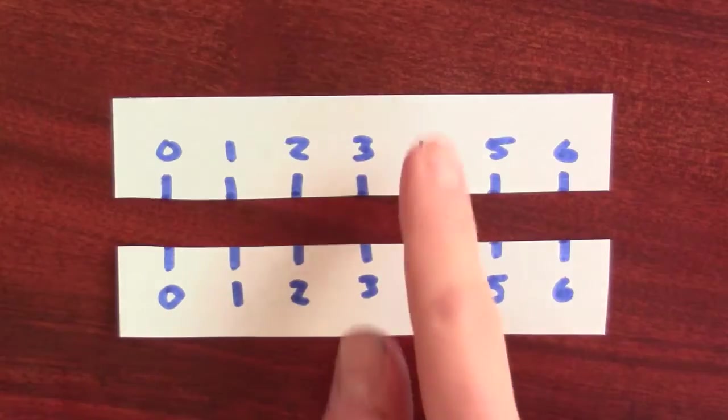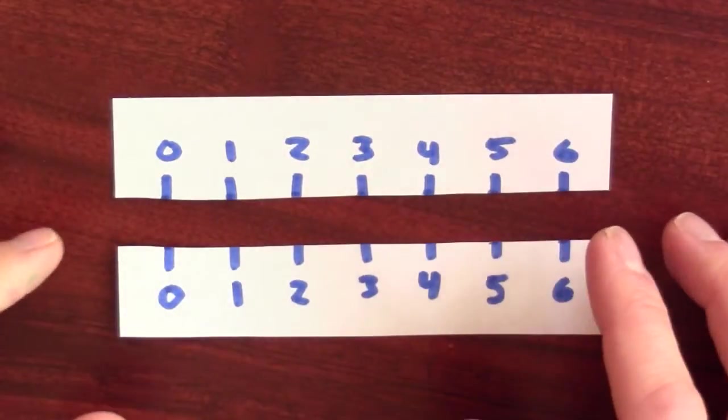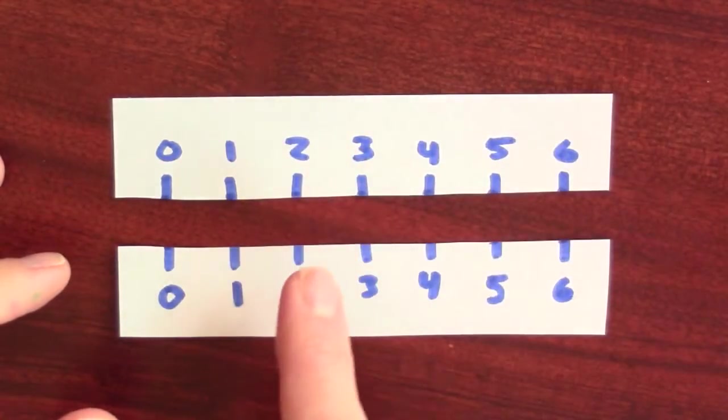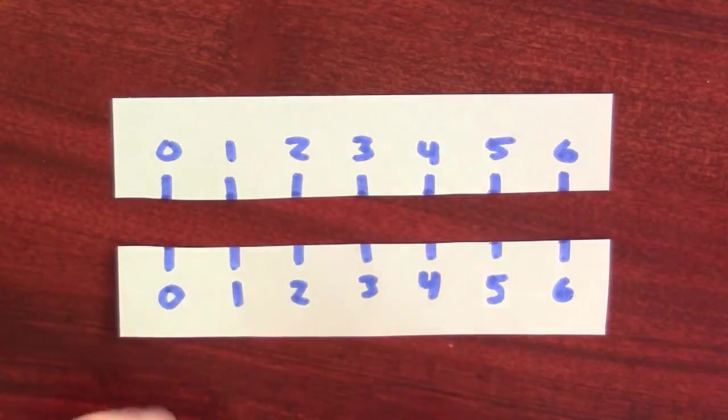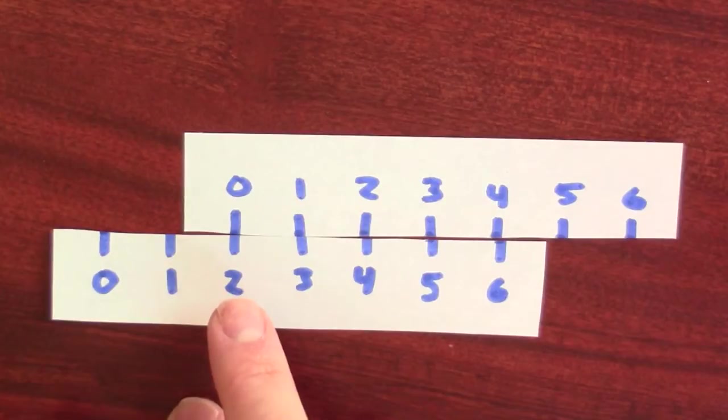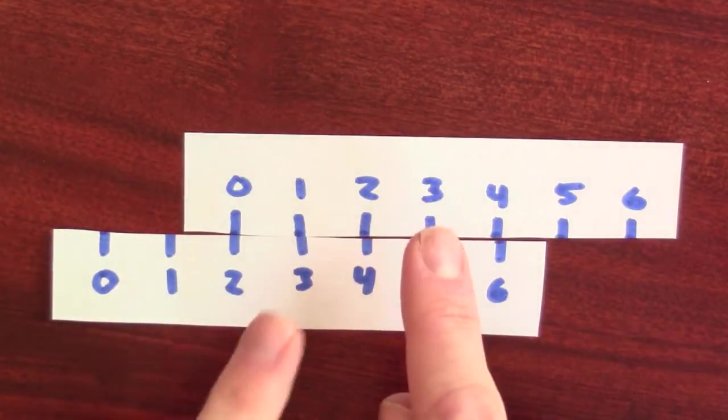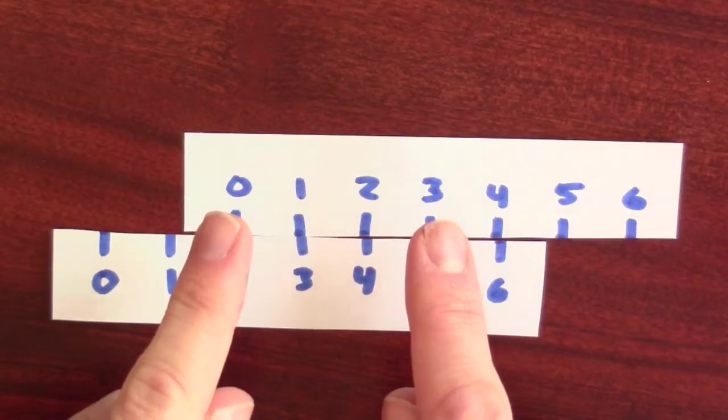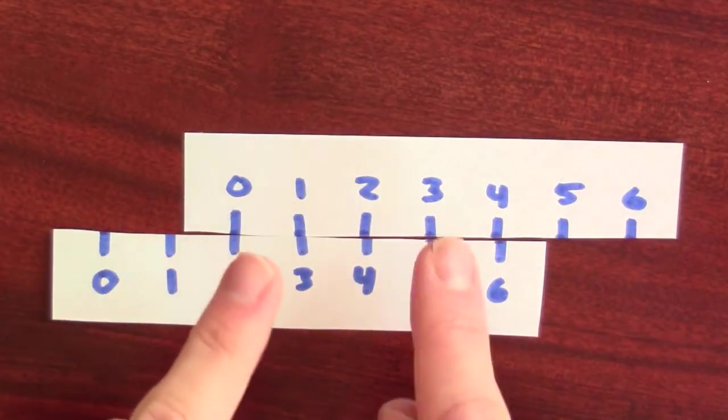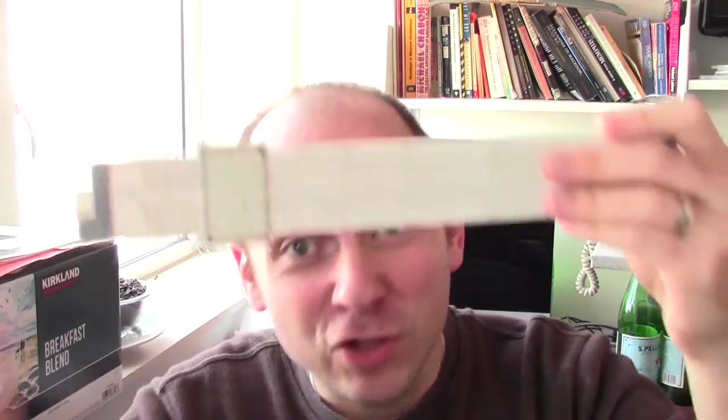There's another way that we can exploit this fact. If I've just got two plain old rulers, I can use the two rulers to add together numbers. Let's say I want to add 3 and 2 together. Well, what I'll do is I'll put the 0 on the top above the 2 on the bottom, so that this distance is 2 units. On the top, the distance between 0 and 3 is 3 units. So, if I want to add 2 units to 3 units, I just read down, and the answer is 5.